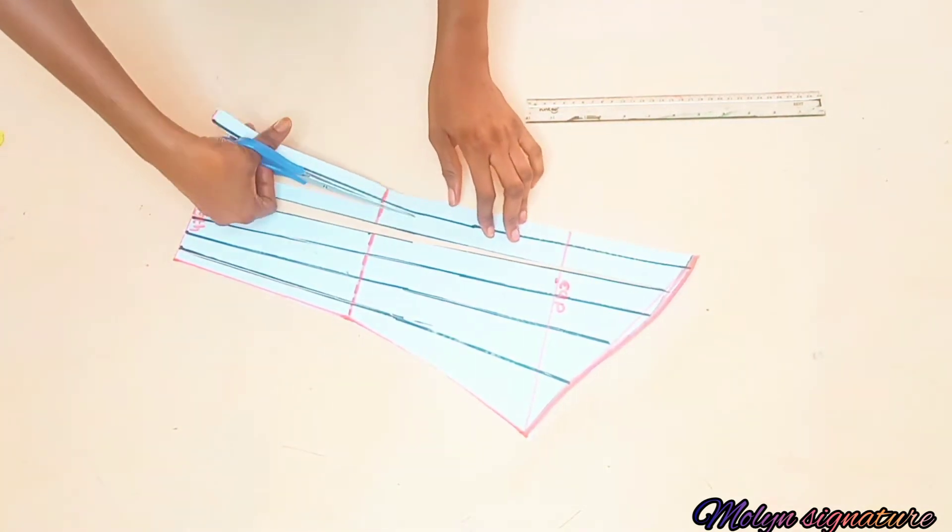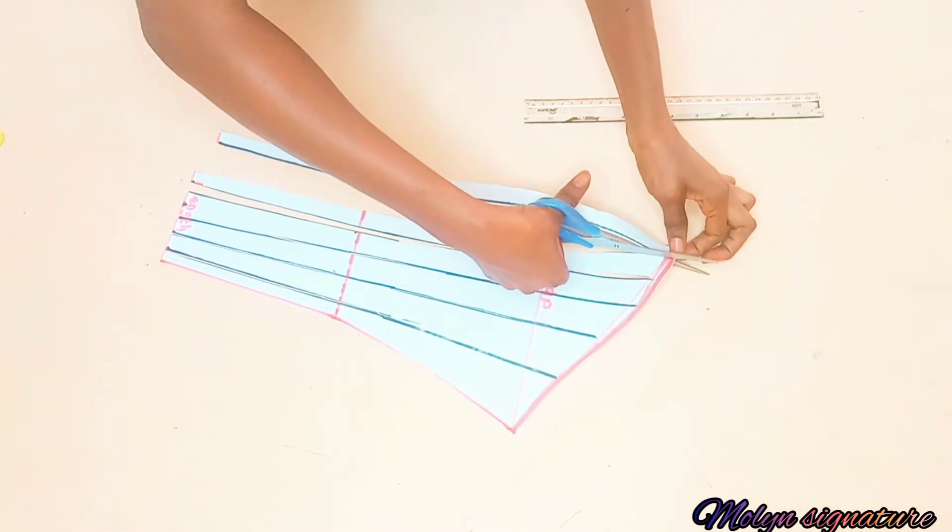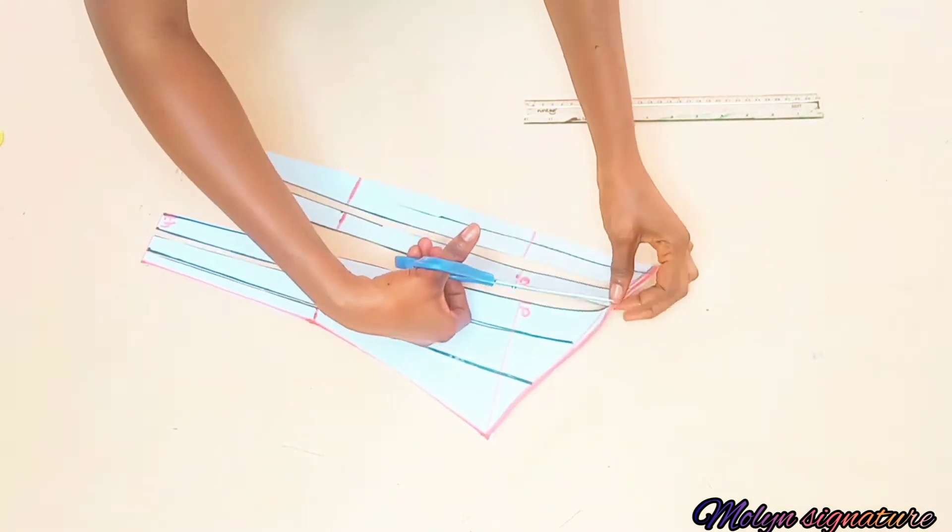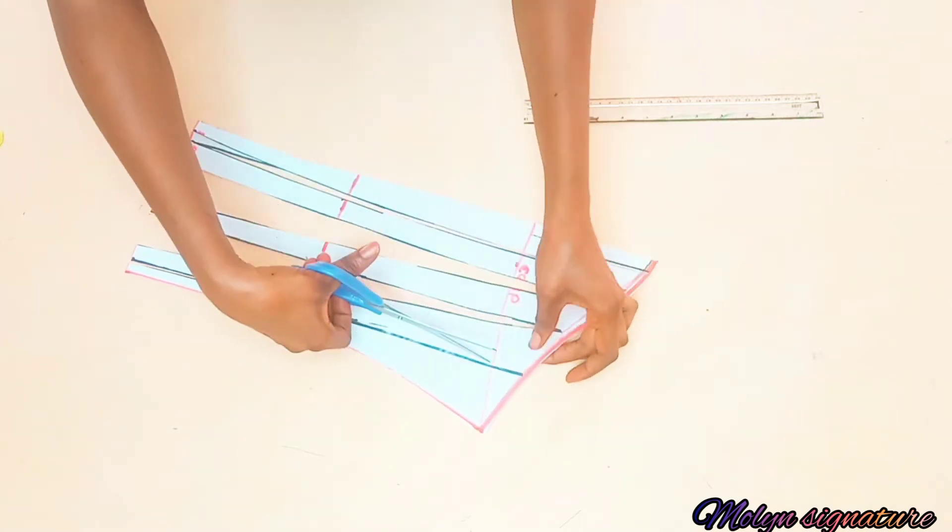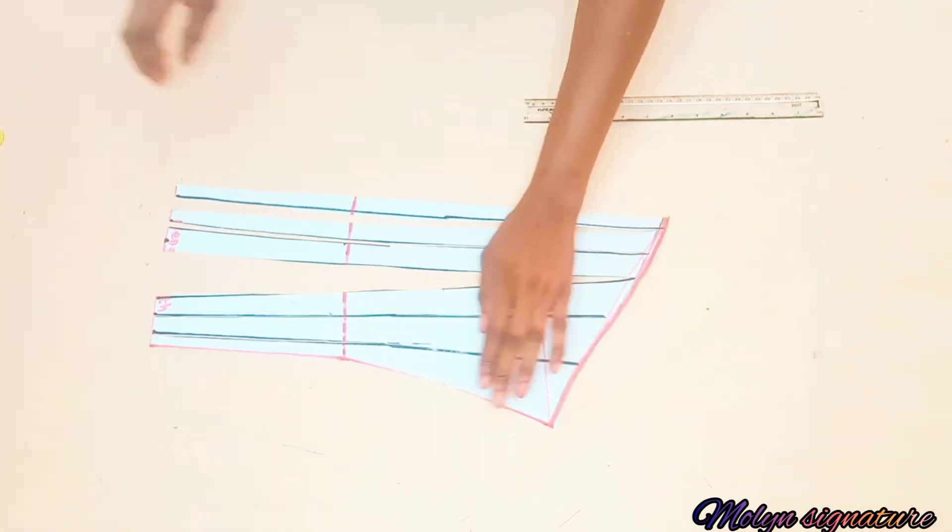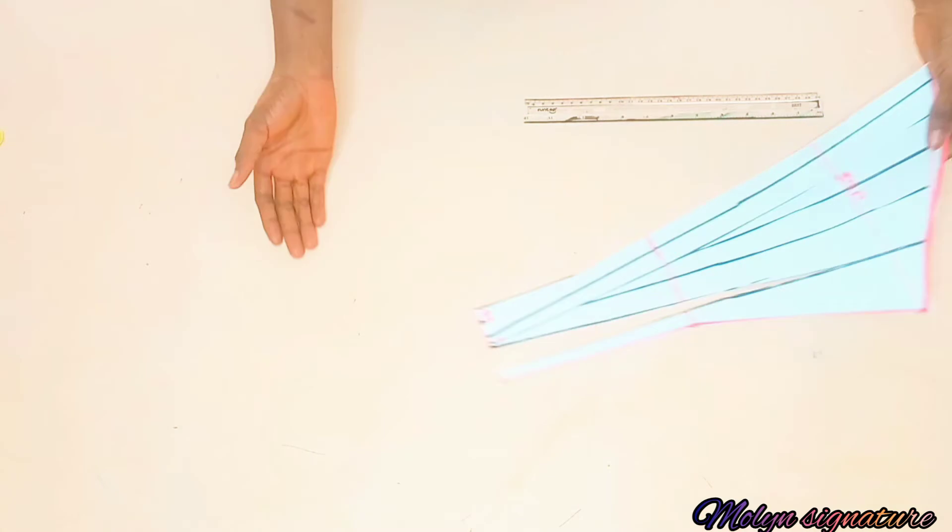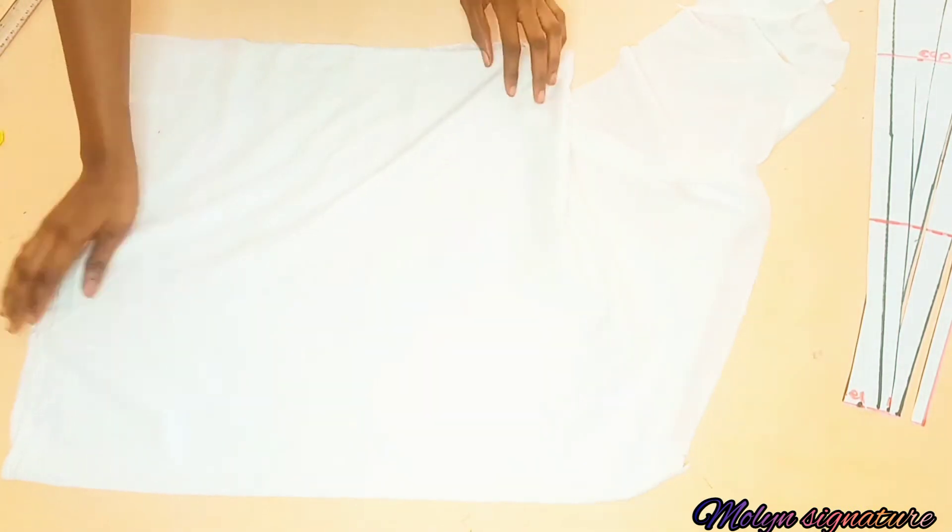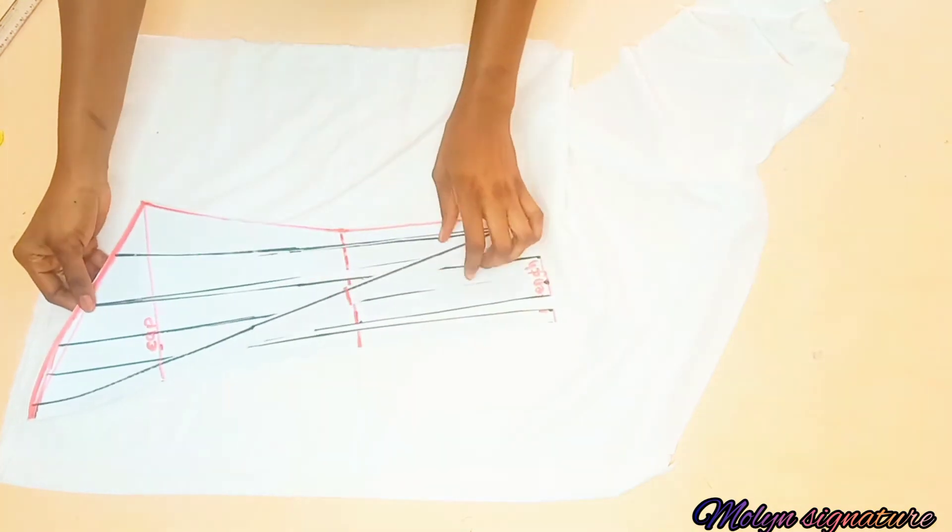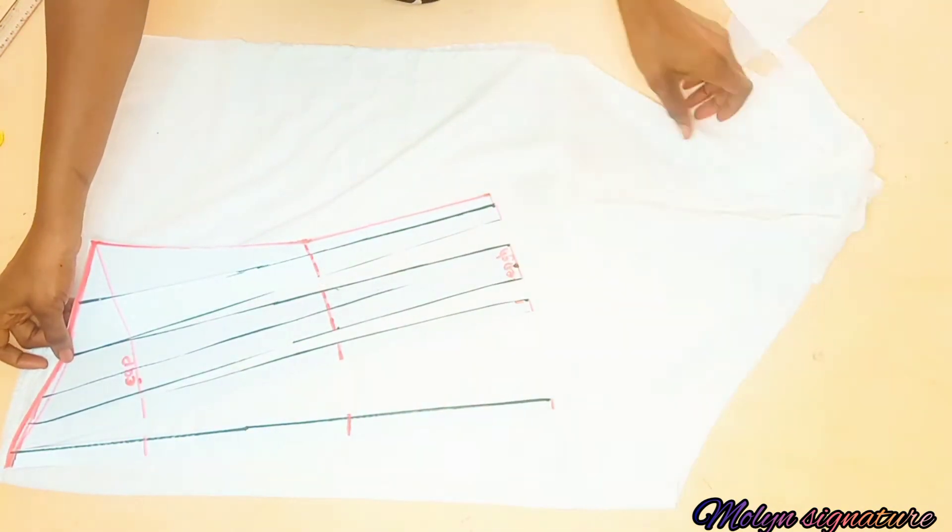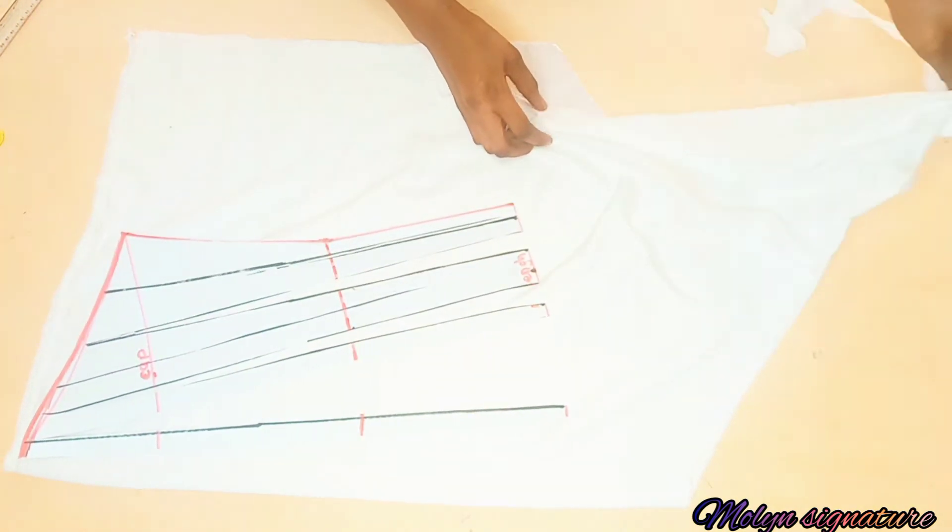After I am done slashing through the lines, I went ahead to place my fabric unfolded. And from there I'm just going to be placing my pattern paper like this with the folded part facing towards the folded area of the fabric.